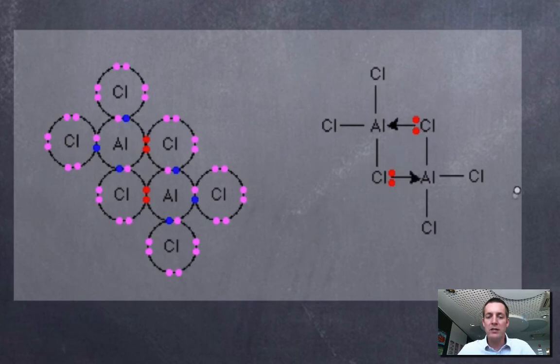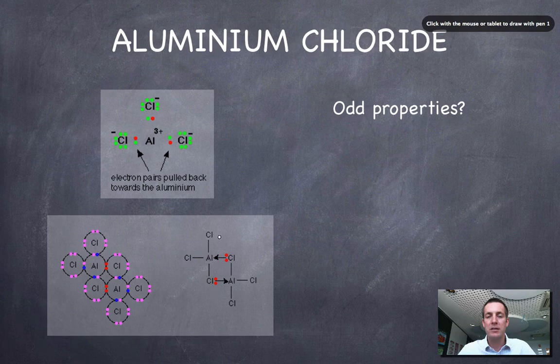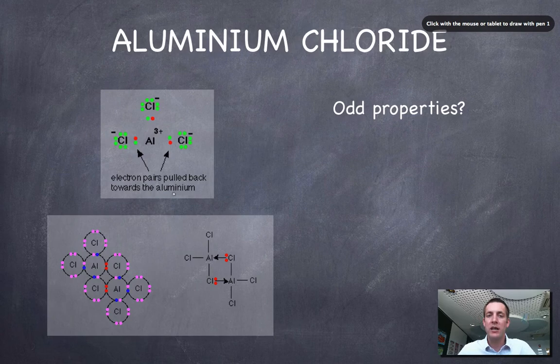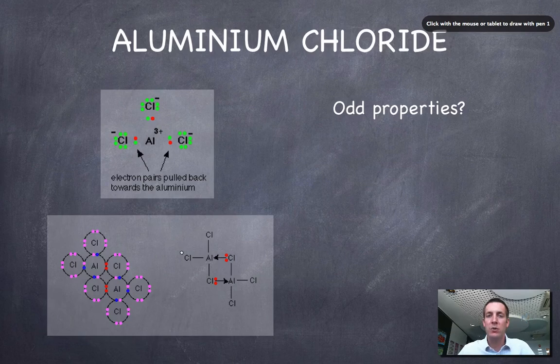And because this is starting to look like a covalent substance, it starts to behave like one as well. So in other words, aluminium chloride has got a much lower melting and boiling point than you would expect to see for an ionic substance. Even though it essentially exists as an ionic lattice in the solid state, it's got such a high degree of covalent character that it behaves quite a lot like a covalent compound does.